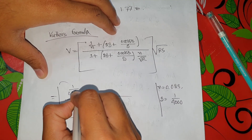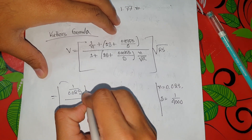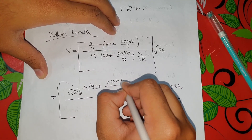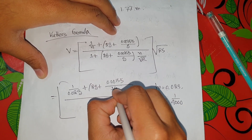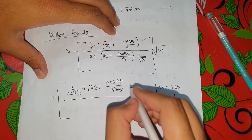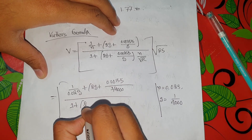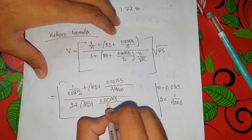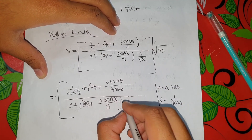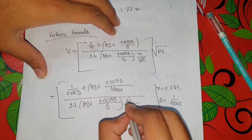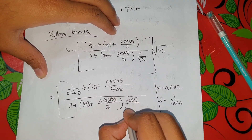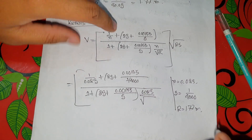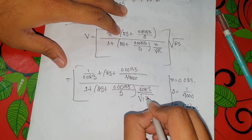Substituting: 1 by 0.023 plus 23 plus 0.00155 over S equals 1 by 4000. Computing through gives a velocity of 1.77 meters per second.